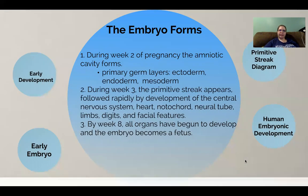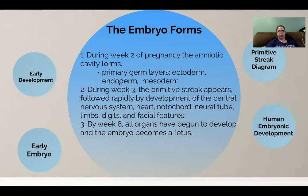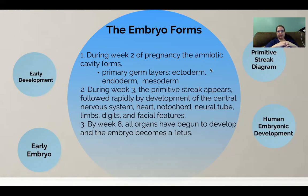During week two of pregnancy, the amniotic cavity forms. Within it we notice the formation of the primitive germ layers — the three layers of cells that will eventually become specific tissues and organs: the ectoderm, the endoderm, and the mesoderm. During week three, the primitive streak forms: the embryo is flattened and starts indenting in the middle. This is followed by development of the central nervous system, the heart, the notochord, and the neural tube — all around the primitive streak — which then leads to limbs, digits (fingers and toes), and facial features.